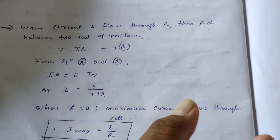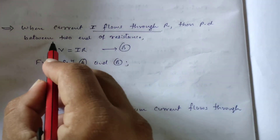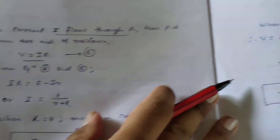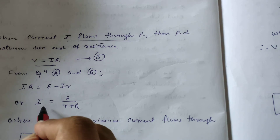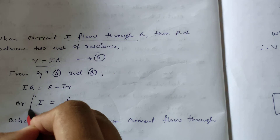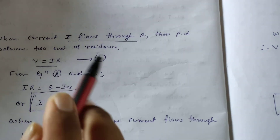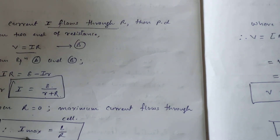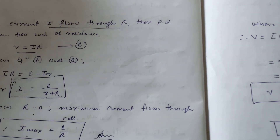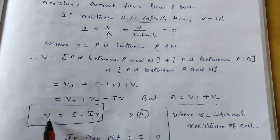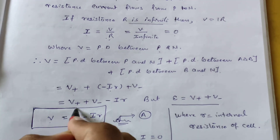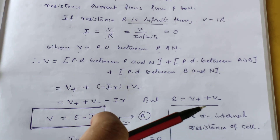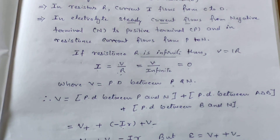This r is also known as the cell's internal resistance. When current flows, for the external circuit we have V = IR. Comparing equation 1 and equation B directly: IR = epsilon − Ir, giving the current I = epsilon / (R + r). This is the amount of current flowing through the circuit. Remember, this equation is very important.